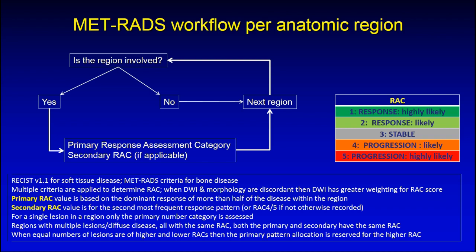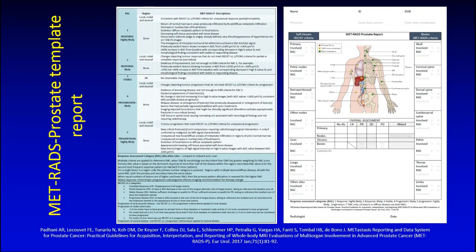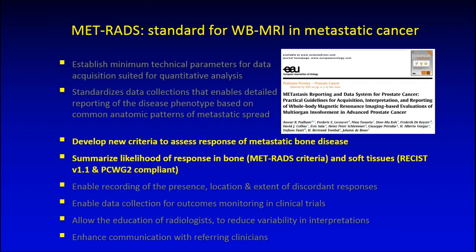The RAC categories are as follows: Category 1 is response highly likely, Category 3 is stable disease, and Category 5 is progression highly likely, with specific rules applied for each region. All of this is summarized within a METRADS template report, which includes a diagram on the right-hand side summarizing what is observed.